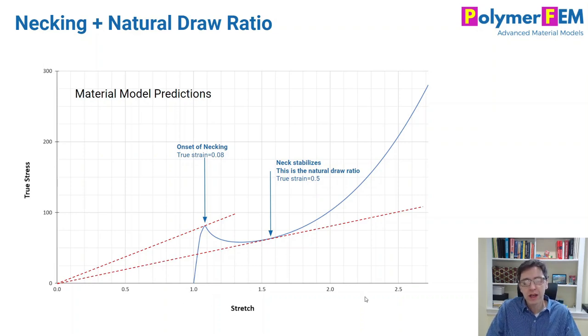Stretch is really directly related to engineering strain. Engineering strain plus one becomes the stretch. You see that if you draw these dashed lines, you can create graphical constructs that indicate approximately where necking will occur and also where the neck stabilizes. And that's the natural draw ratio.